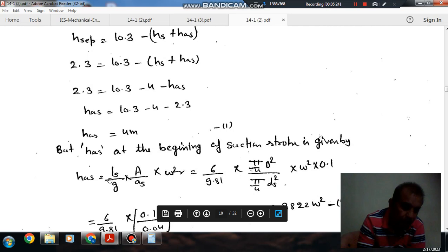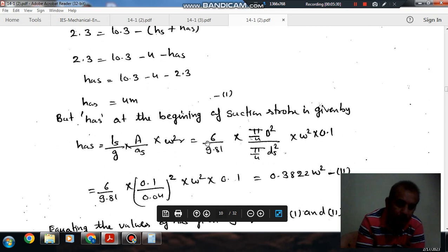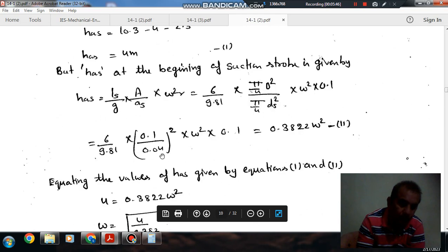We'll put the values: Ls is 6, D is 0.1, diameter of suction pipe is 0.04, and radius of crank is 0.1 meter. So we can find out omega.